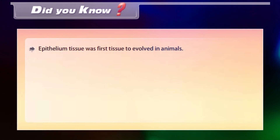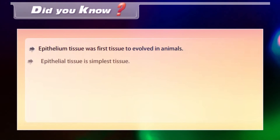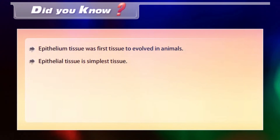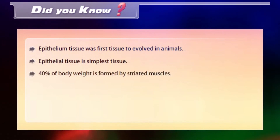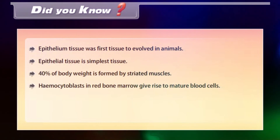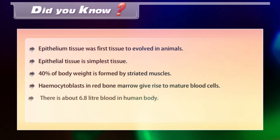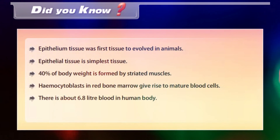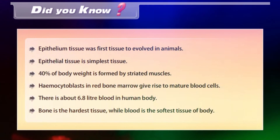Did you know? Epithelial tissue was the first tissue to evolve in animals and is the simplest tissue. 40% of body weight is formed by striated muscles. Hemocytoblasts in red bone marrow give rise to mature blood cells. There is about 6.8 liters of blood in the human body. Bone is the hardest tissue while blood is the softest tissue of the body.